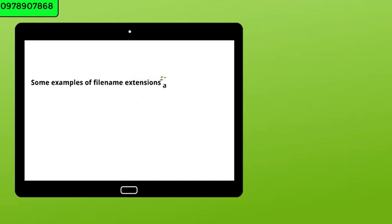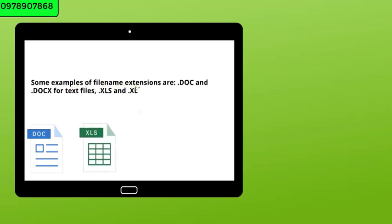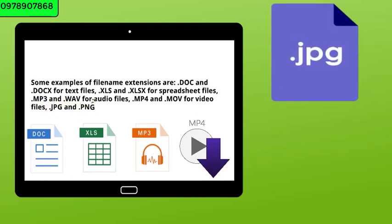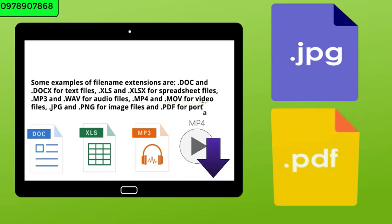Some examples of file name extensions are: .doc and .docx for text files, .xls and .xlsx for spreadsheet files, .mp3 and .wav for audio files, .mp4 and .mov for video files, .jpg and .png for image files, and .pdf for portable document files.